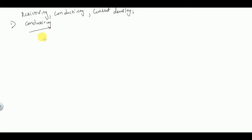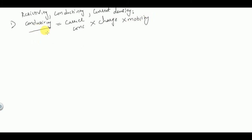So what is conductivity? Conductivity represents the current carrying capacity of a material or any device. Generally, conductivity is given by carrier concentration multiplied by charge of carrier multiplied by its mobility. Conductivity of electrons is given by σ_n = nqμ_n, and similarly the conductivity of holes is given by σ_p = pqμ_p.